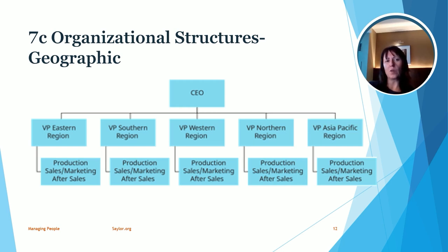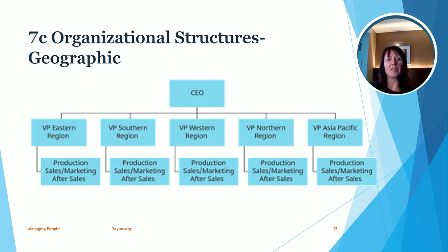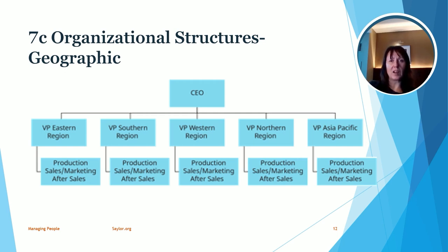That covers organizational structures. One final note: organizational structures are really important as part of the creation of organizational culture because these are formal networks where you're grouping people together who are going to be working together. It's really important to think about the best organizational structure to get things done without as much bureaucracy, where people can move new ideas forward at a fast pace — since that's an important part of culture and a dynamic environment.